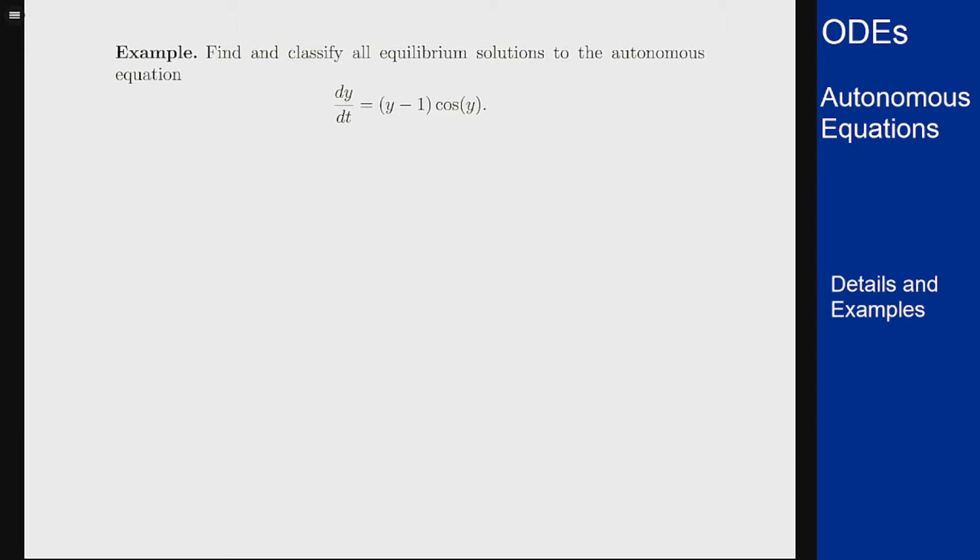So the thing you want to look for is where is this function 0? Here's a function f(y). I'm looking for the zeros of this function. f(y) is 0 either when y equals 1 from this first term or when cos(y) equals 0.